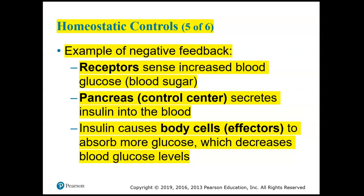In the case of blood glucose as a negative feedback example: receptors sense the increased blood glucose. The pancreas is the control center and secretes insulin — the chemical messenger — into the blood. Insulin causes body cells, particularly liver cells and muscle cells — these are the effectors — to absorb more glucose from the blood in response to the insulin, and that lowers blood glucose levels.